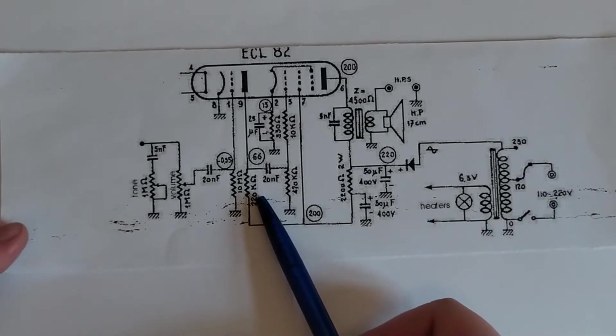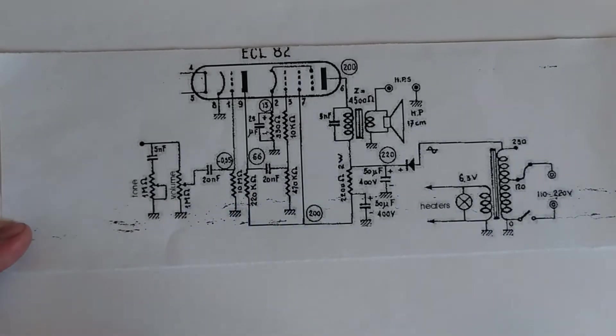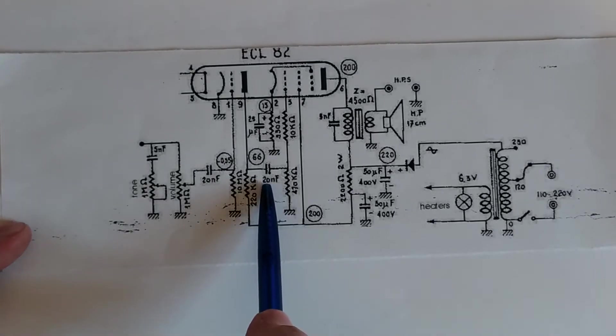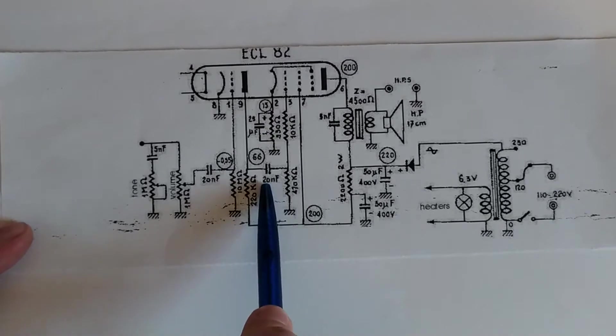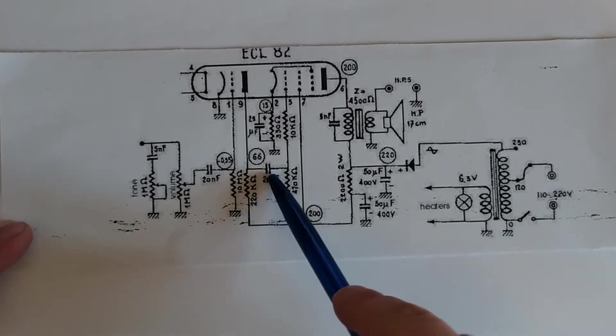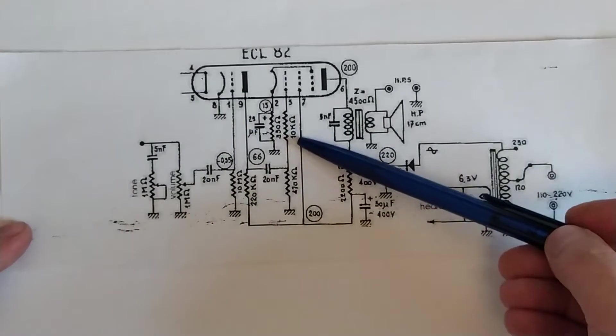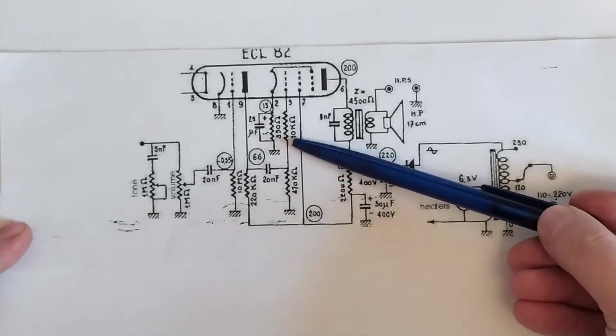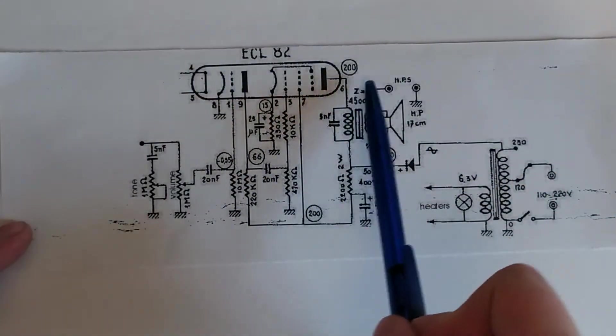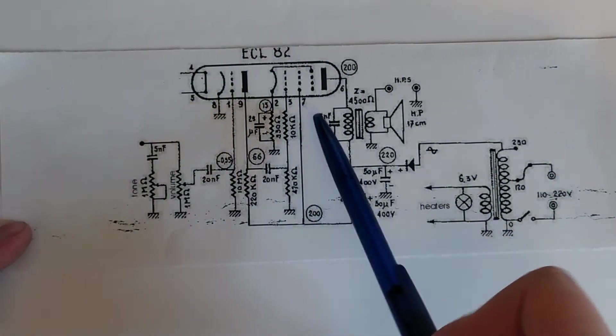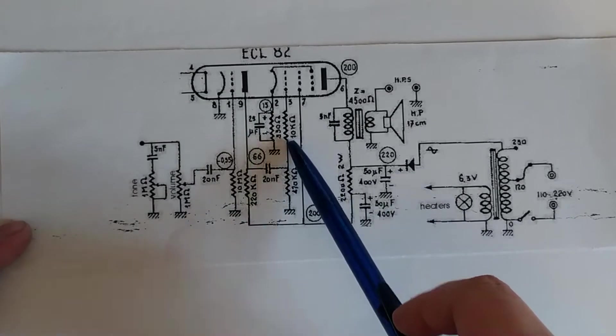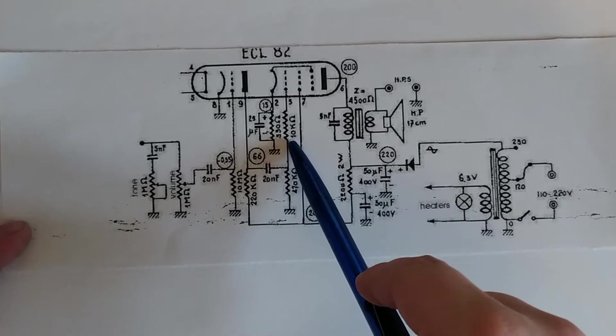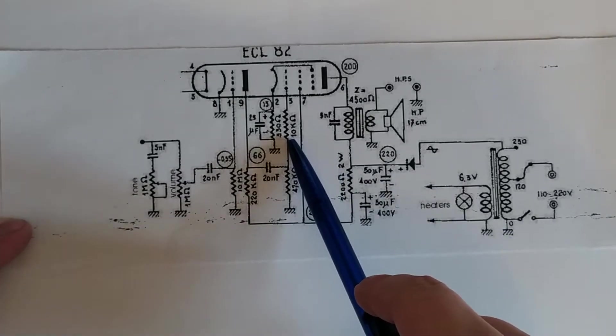What we'll definitely change is we'll have more than 220 nanofarads here - I'm thinking more of a microfarad as a coupling cap. The grid stopper of 10 kilo ohms here is quite important because these combination valves or vacuum tubes, it's very easy to induce them to oscillate at RF frequencies and they're fairly unstable.